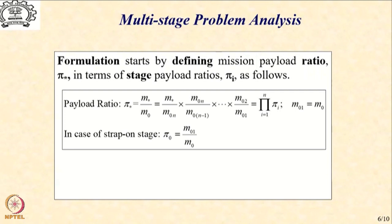A related issue to be discussed later is that if there are strap-on stages — what we call boosters, which are used in most rockets — there will be one more payload ratio called π_0, the payload ratio for the zeroth stage. The booster or strap-on stage is also called the zeroth stage to differentiate it from the first, second stage, etc. We will talk more about it when we discuss parallel staging.